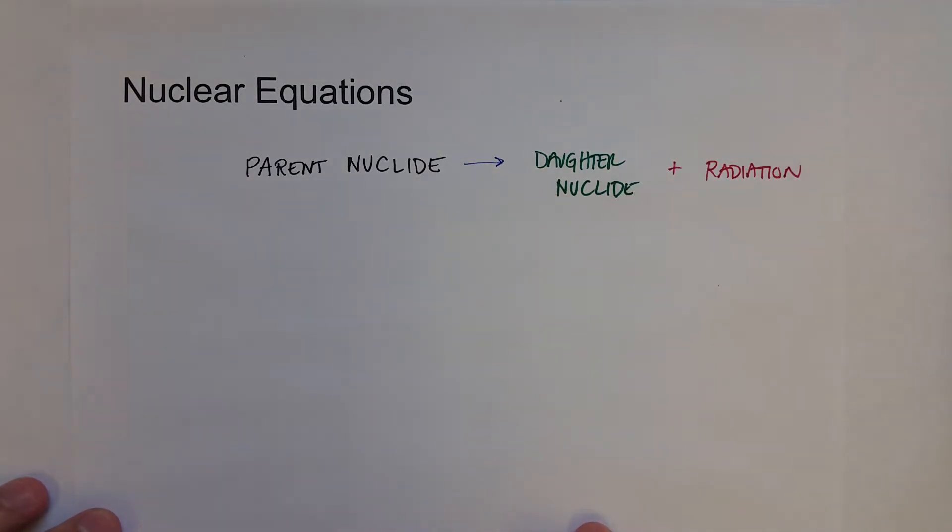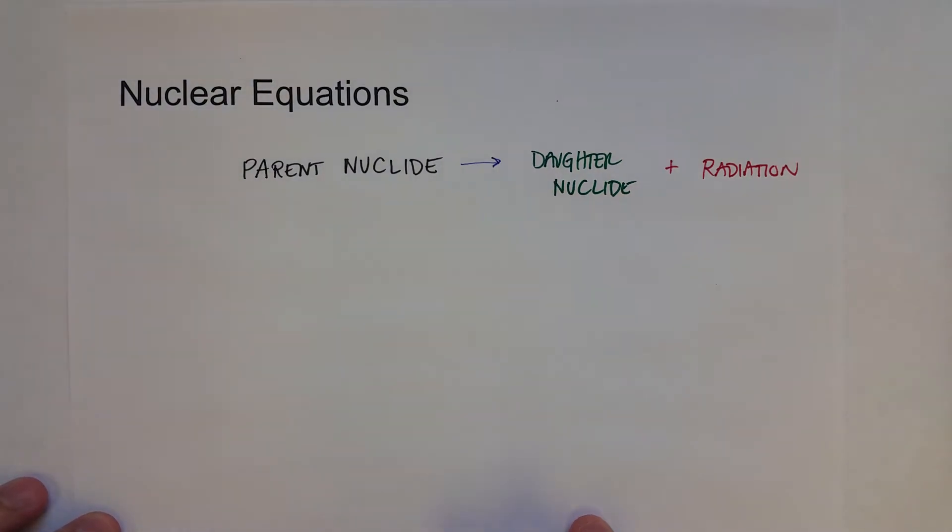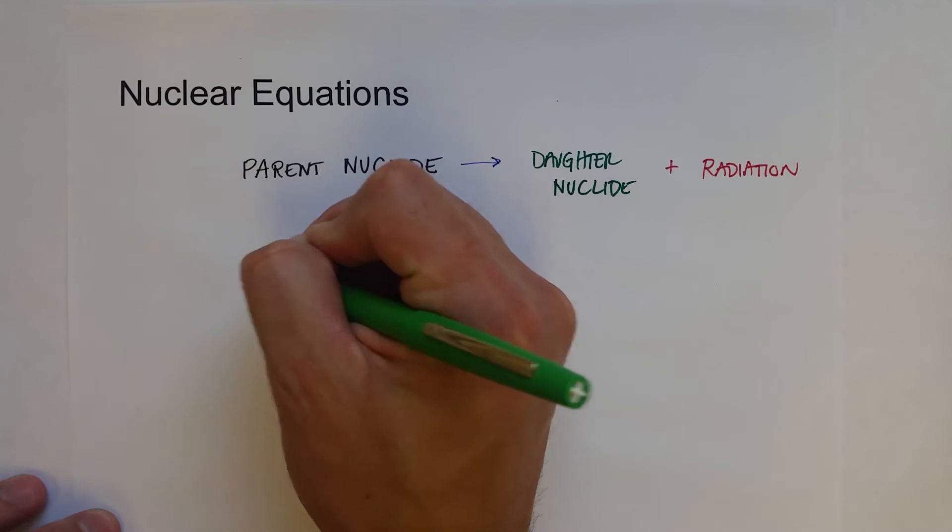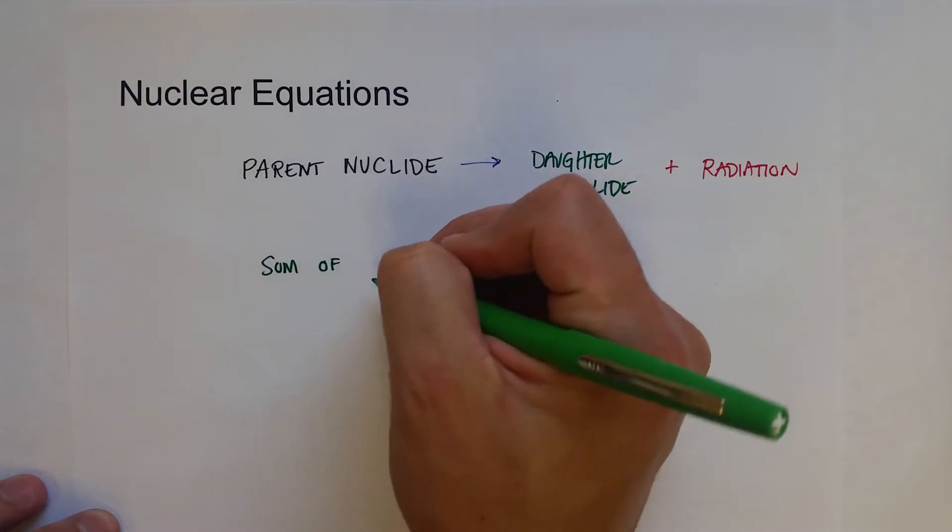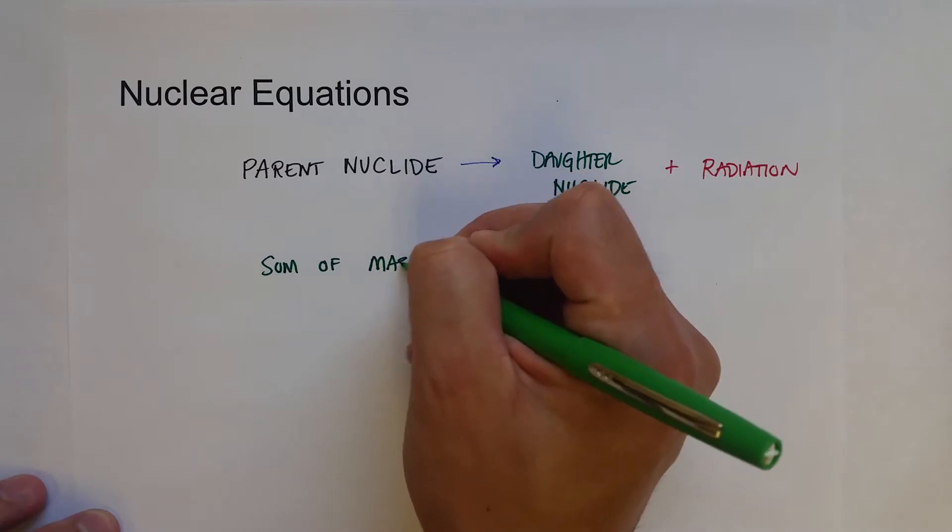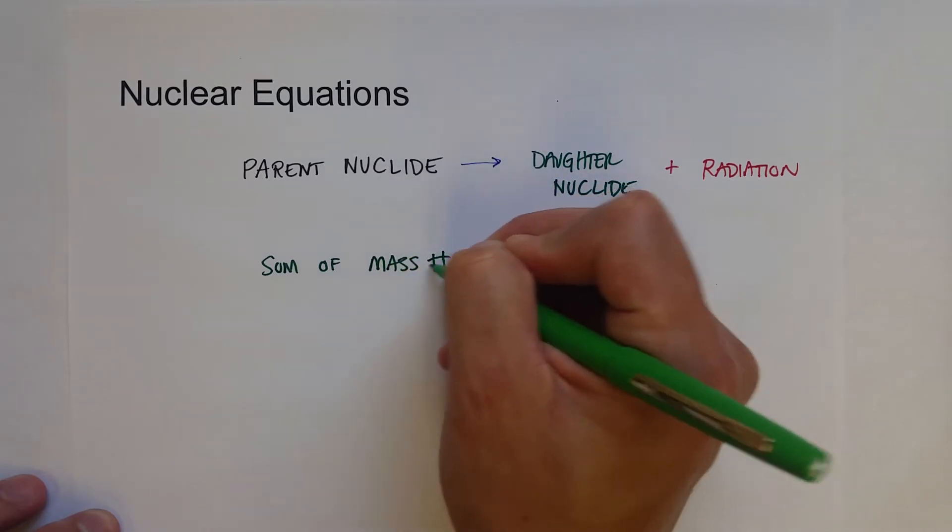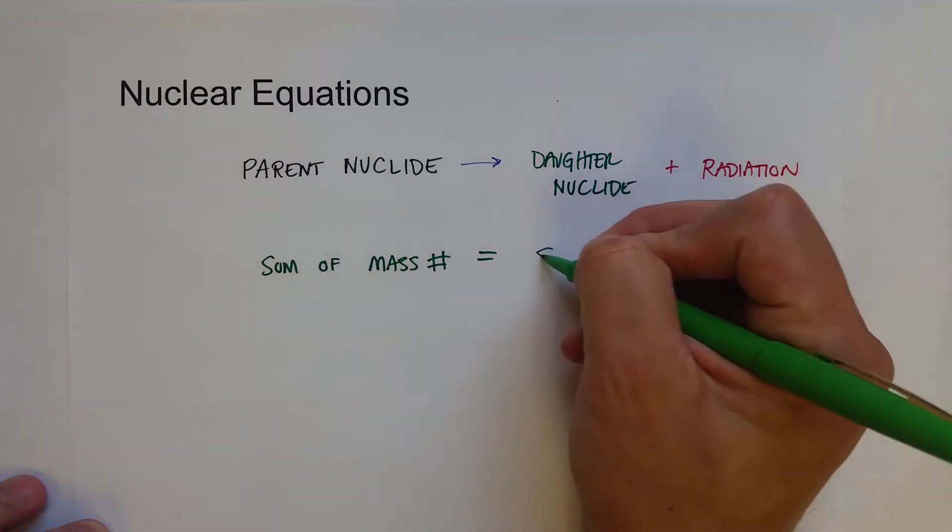To keep track of everything going on in a nuclear reaction in the form of a nuclear equation, what we're going to need to do is to make sure that two things are equal to each other. The sum of the mass numbers needs to be equal on both sides of this equation. The sum of the mass numbers on the left side and the sum of the mass numbers on the right side.